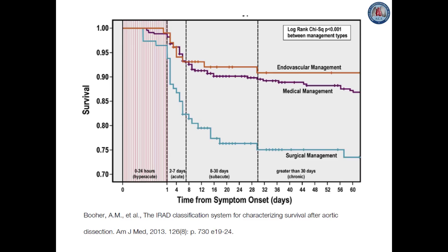The four temporal periods identified were: hyper-acute, with symptom onset of 0–24 hours; acute, with symptom onset of 2–7 days; subacute, the 8–30 day period; and chronic, the greater than 30 day period. Cumulative survival continued to decline throughout all four of these temporal groups regardless of treatment modality: 94–99%, 82–93%, 77–92%, and 73–91%, respectively. The finding that survival continues to decrease significantly up to even 30 days post-symptom onset — into what has been traditionally considered the chronic phase — is novel. While current guidelines utilize the traditional acute versus chronic time periods, it is expected that this new IRAD classification system will assist in improving best practice for management.